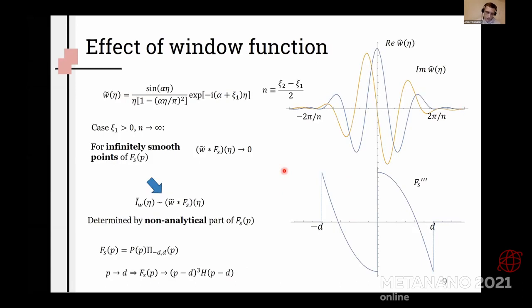And to understand how the spectrum forms, we should understand how window affects the autocorrelation function. From our analysis, we obtain that due to we cannot measure the forward direction, the perfect forward direction, the spectrum tends to zero in infinitely smooth points of integrated autocorrelation function. And that means that this spectrum will be determined only by non-analytical points of this function, here, here, and here.